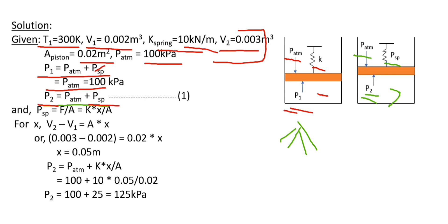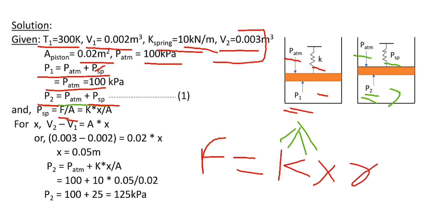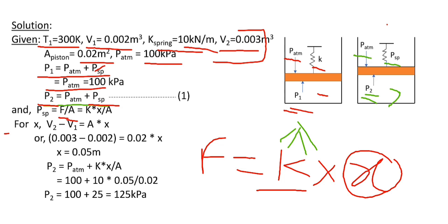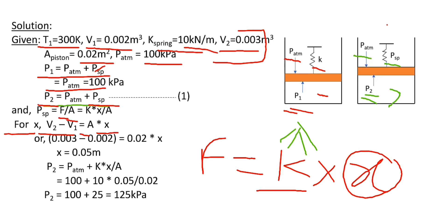To find the value of P2, the final pressure, we simply need to find the spring pressure, which is P_sp. Spring pressure equals the force exerted by the spring divided by area. The force exerted by the spring equals the spring constant K multiplied by the displacement X. The value of K is given in the question, so X is the unknown.